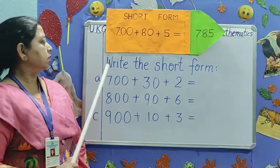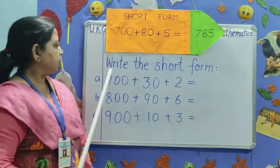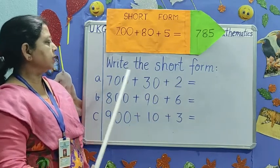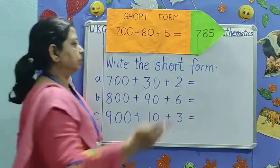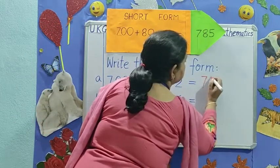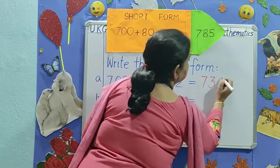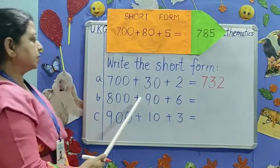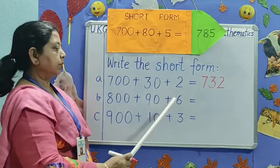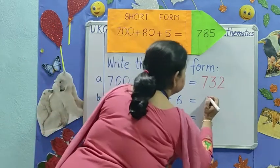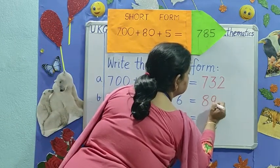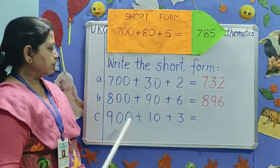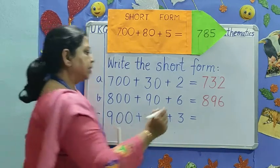Read the question. Write the short form. 700 plus 30 plus 2. 732. Next number is 800 plus 90 plus 6. 896. 900 plus 10 plus 3.